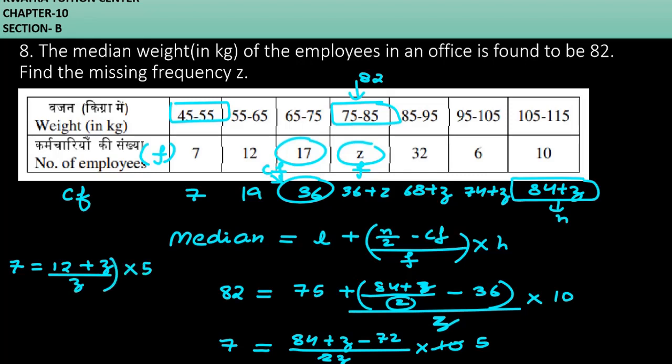We can change the values. Z is in multiplication with 7, then 12 into 5 is 60, plus 5Z. 5Z on the left side gives 2Z equals 60, so Z equals 30. Yes, this is your answer for question number 8. The missing frequency is 30.